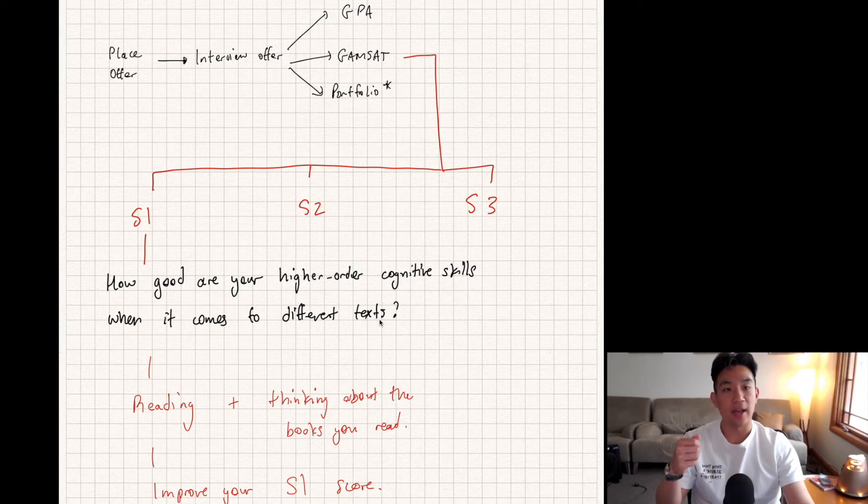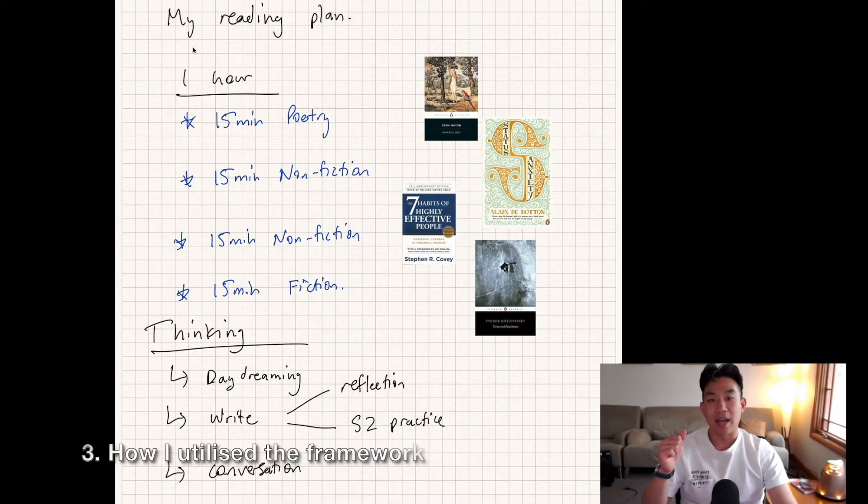How? By reading different texts and thinking about the texts that you have read. In this way, I believe this is the correct way to improve your Section 1 score, and it all comes down to how many reps of this you have done.